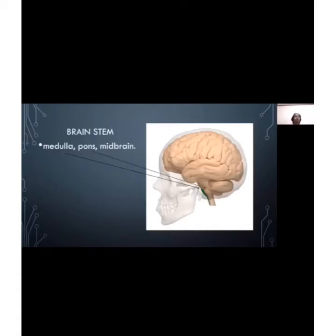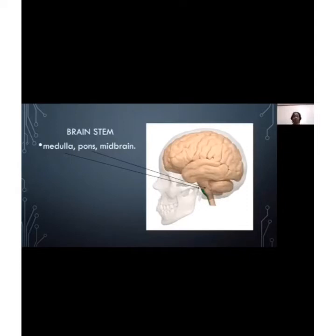The pons is a portion of the brain stem located above the medulla and below the midbrain. It serves as a bridge between various parts of the nervous system, including the cerebellum and the cerebrum. The pons plays an especially critical role in generating the respiratory rhythm of breathing, and active functioning of the pons may also be fundamental to rapid eye movement.